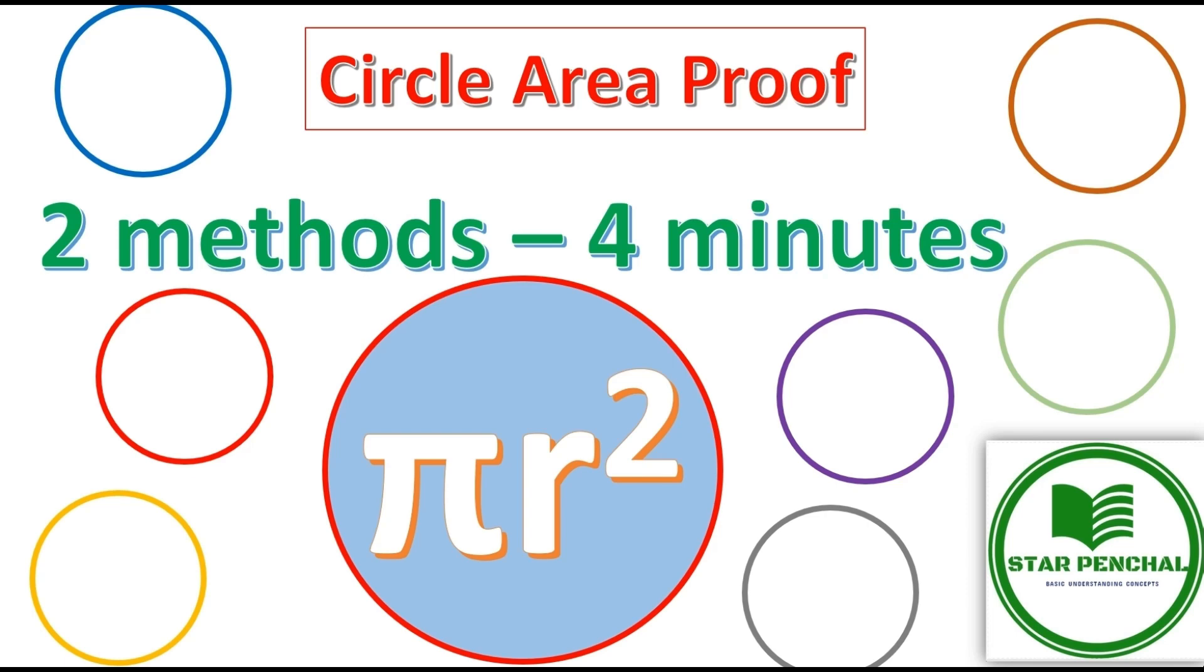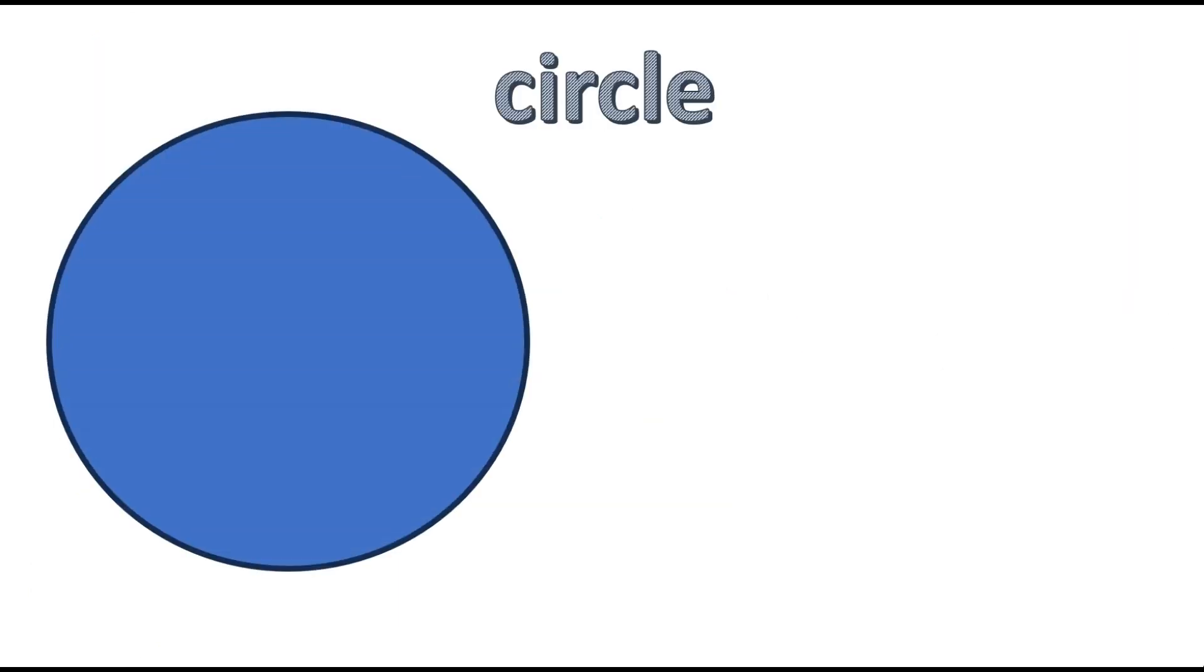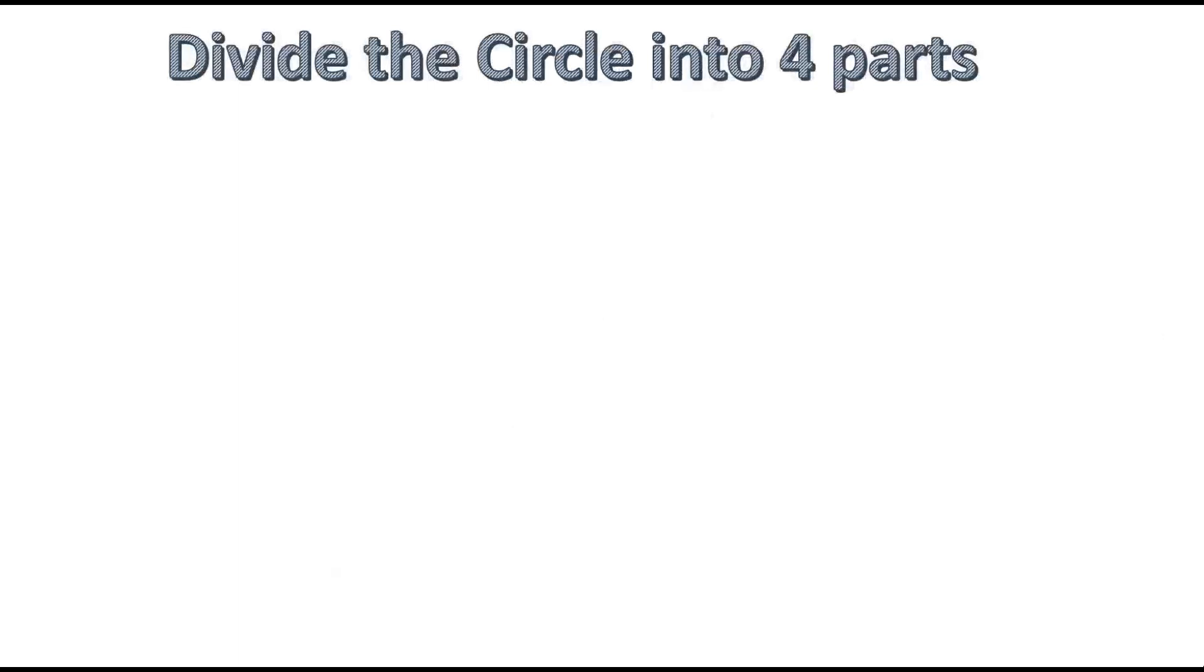I will explain circle area proof using two methods in four minutes. Let's start with method one. Let's take a circle with radius r and circumference 2πr, and divide the circle into four parts.